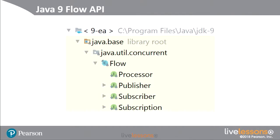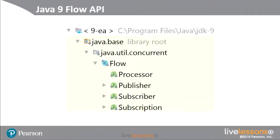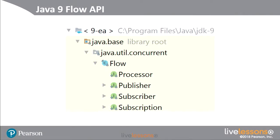Java 9 has adopted the Reactive Streams API as a standard and built it into the language. Java 9 has introduced the idea of the Flow API — it's under java.util.concurrent. We have a Flow class which has a processor, a publisher, a subscriber, and a subscription. This should look very familiar; it looks pretty much identical to the Reactive Streams API we just looked at. On the left you see the Java 9 Flow API and on the right you see the Reactive Streams API. They are the same interfaces and they do have the same methods, but they're in a different package, and in Java 9 the interfaces are part of the Flow class.